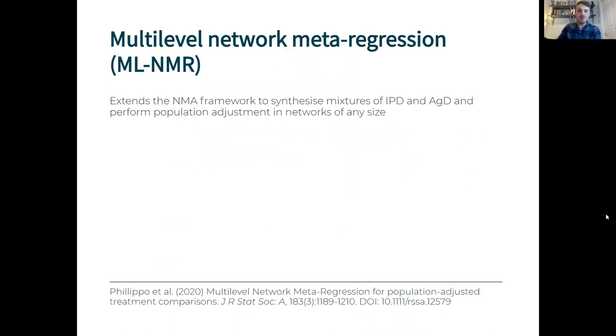Multi-level network meta-regression or MLNMR is a recent extension of the NMA framework to synthesize mixtures of IPD and aggregate data in networks of any size whilst performing population adjustment.